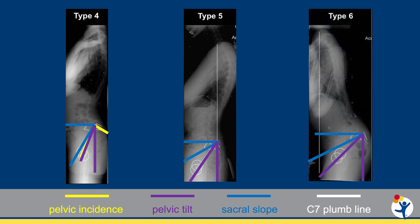In a type 6 patient, there is also a low sacral slope and a high pelvic tilt representing sacral pelvic imbalance, but these patients are also globally out of balance, as seen with the C7 plumb line falling well anterior to the sacrum. In contrast, in the type 5, the C7 plumb line falls through the center of the sacrum.